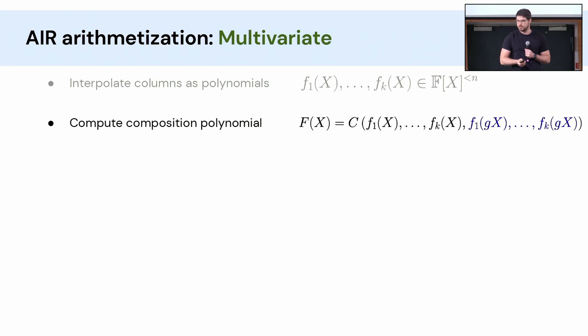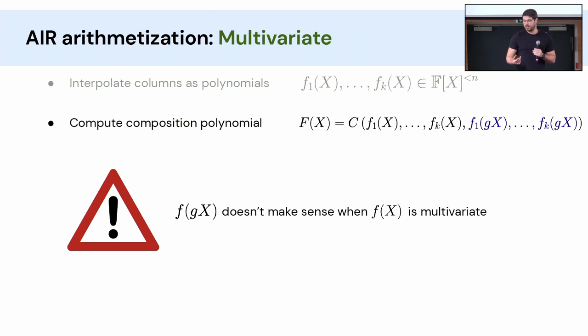Now what if we wanted to do that with multivariate polynomials? The answer is no because here we have the term g*x which doesn't really make sense because x now is multivariate. It's like x1 to xk. So multiplying by g doesn't really make sense. It turns out that I don't know how you would do it by just trying to take the previous protocol and transforming it for AIR.